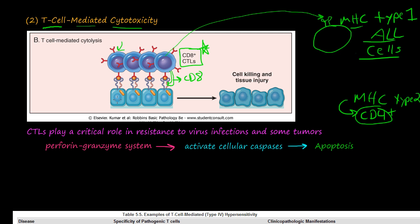The antigen here — some kind of virus particle or tumor marker — is the target. These CD8 plus, or cytotoxic T lymphocytes, play a critical role in resistance to viral infections and some tumors. Because MHC type 1 is on all cells of your body, the CD8 plus T-cells are constantly checking all cells. This is the normal surveillance pattern, before we talk about how it goes wrong.